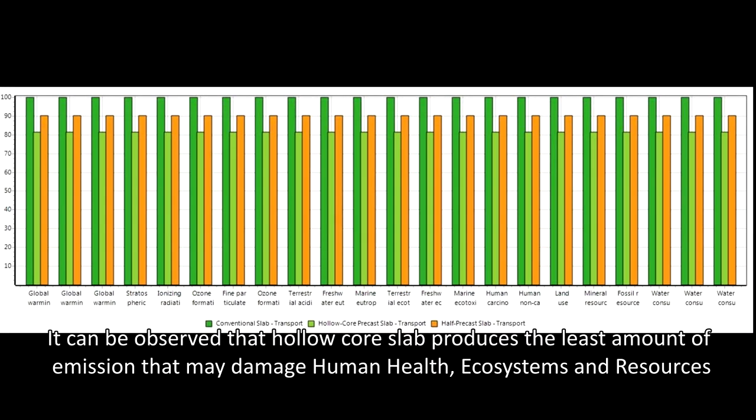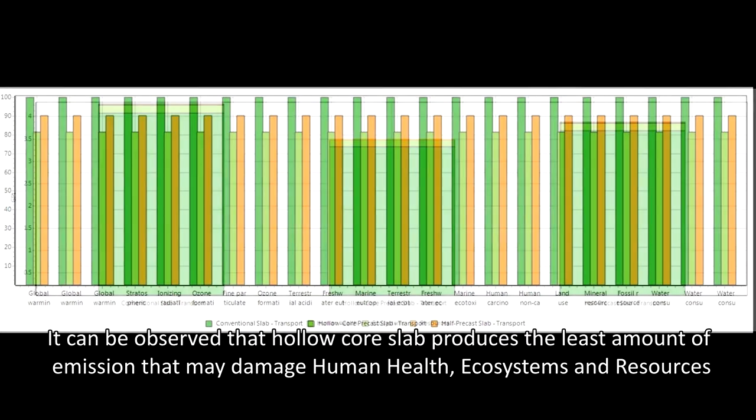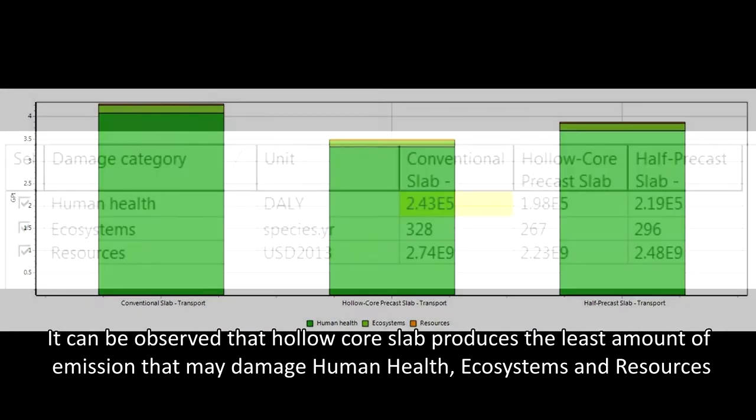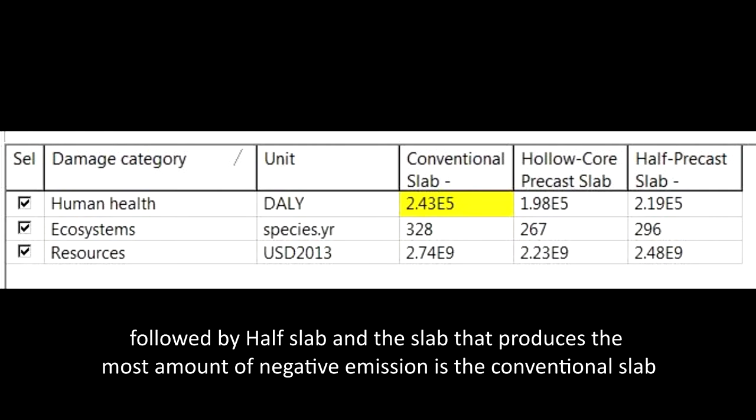It can be observed that hollow core slab produces the least amount of emission that may damage human health, ecosystems, and resources, followed by half slab, and the slab that produces the most amount of negative emission is the conventional slab.